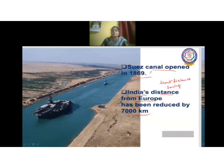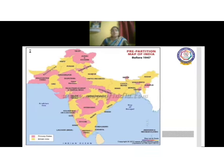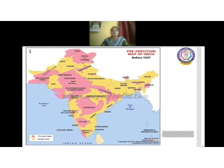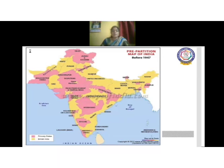The Suez Canal opened in 1869. Now a pre-partition map is shown — before 1947, how our country had its territory before independence. Many princely states were ruled by kings and princes, and after independence, it was Sardar Vallabhbhai Patel who organized the reorganization of states through military strategy and diplomatic means, bringing many princely states to unite with our country.